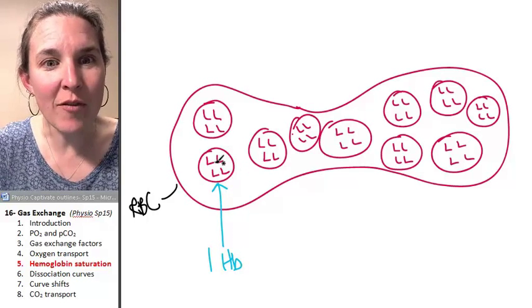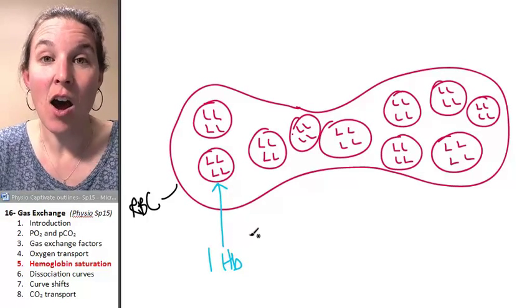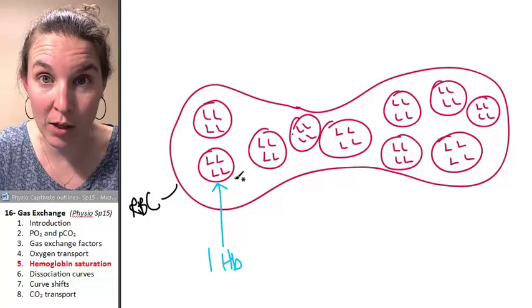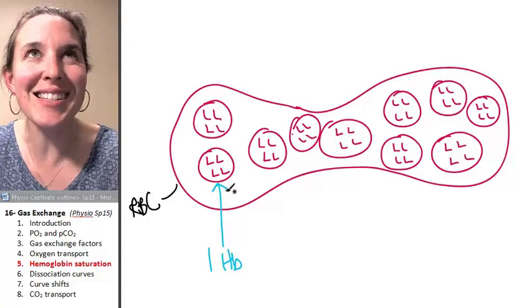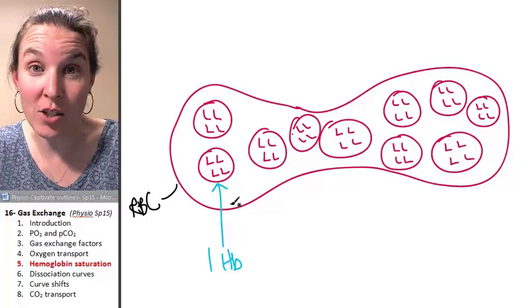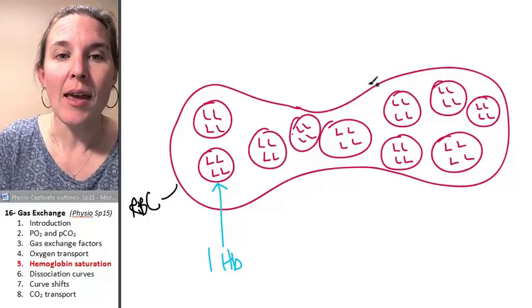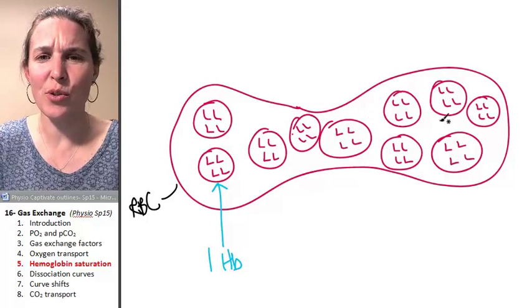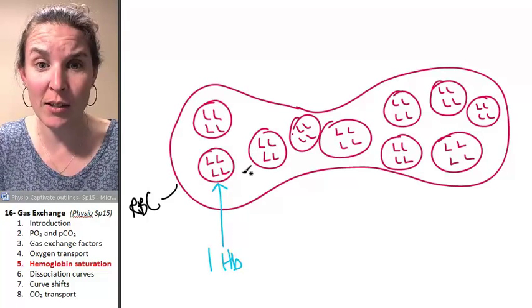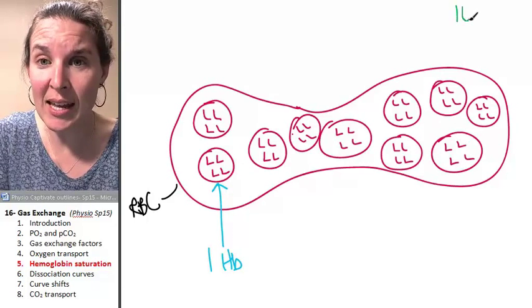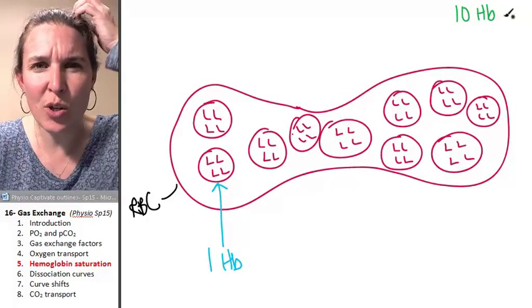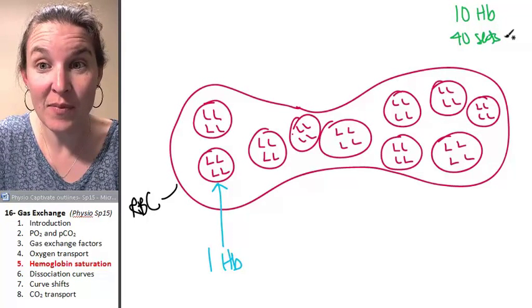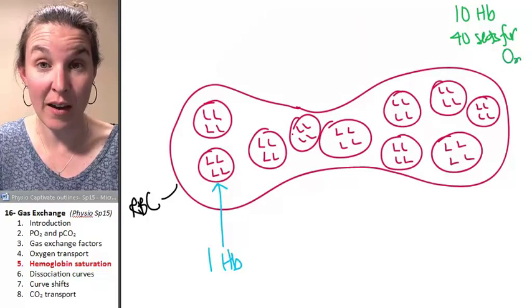And each one of my little Ls is an oxygen seat on the bus. Does it work for you? Here's a hemoglobin molecule that has seats for four oxygen molecules. I drew ten hemoglobin molecules here, so I have a total of ten hemoglobins, which means I actually have 40 seats for oxygen available.